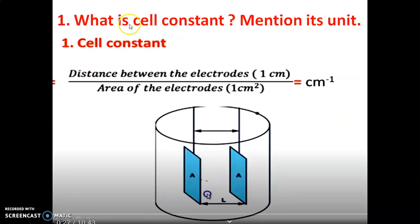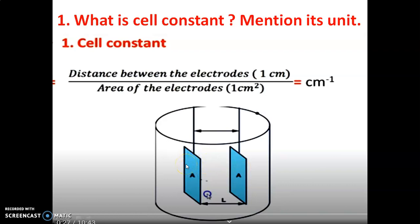First question: What is cell constant? Mention its unit. Cell constant is the ratio of distance between the electrodes to the area of the electrodes. In a conductometer, we use two platinum sheets. If the distance is 1 cm and the area is 1 cm², the cell constant is 1 cm. The unit of cell constant is per cm.